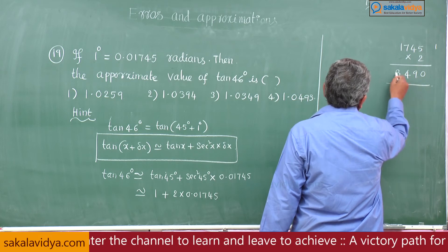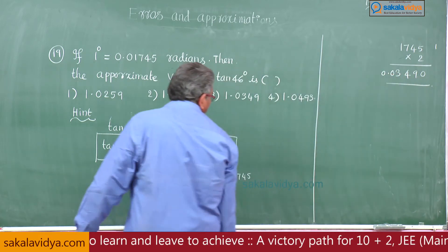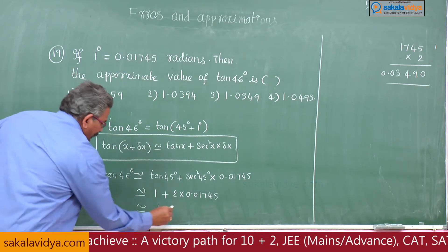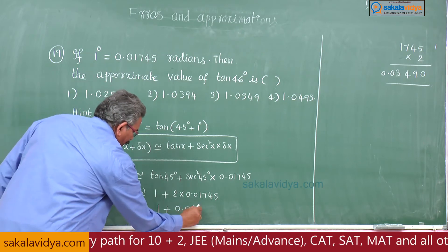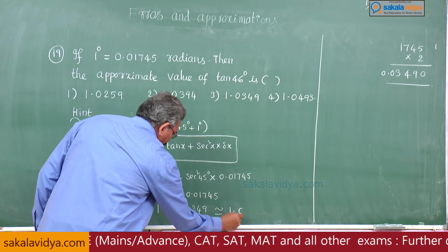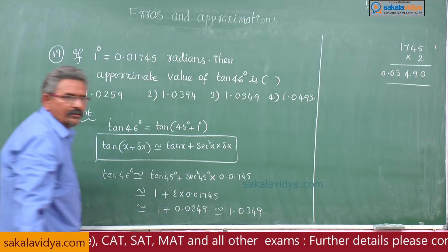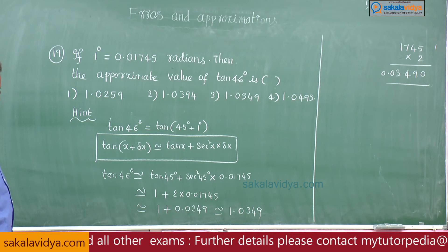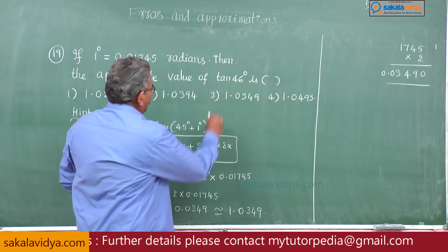This is equal to 1 plus 0.0349, which approximately equals 1.0349, which is the right option. I think third option.